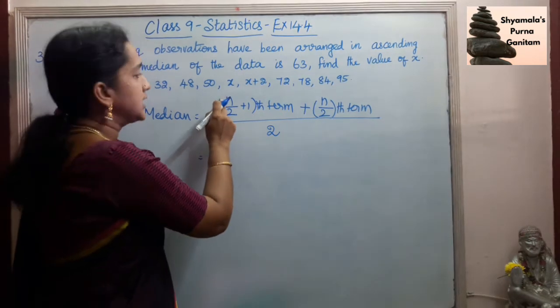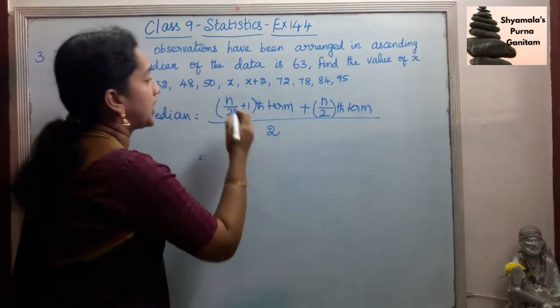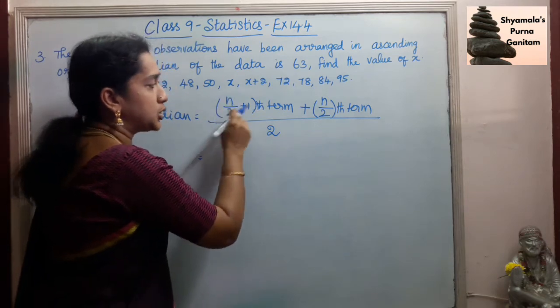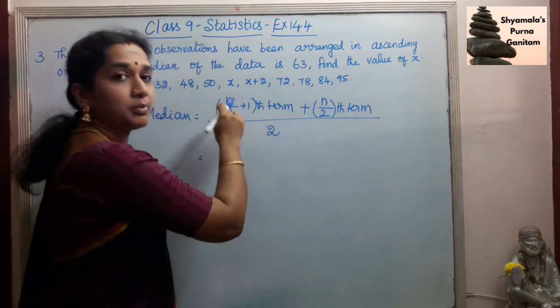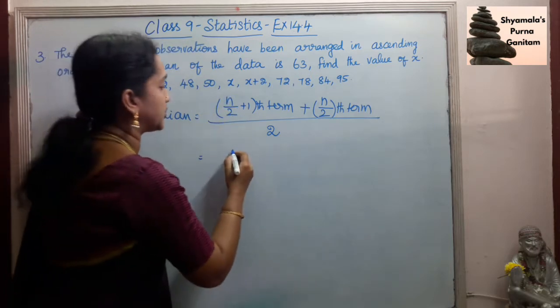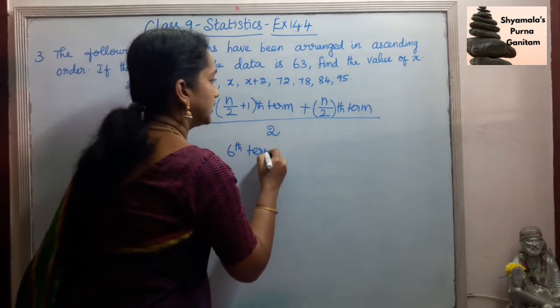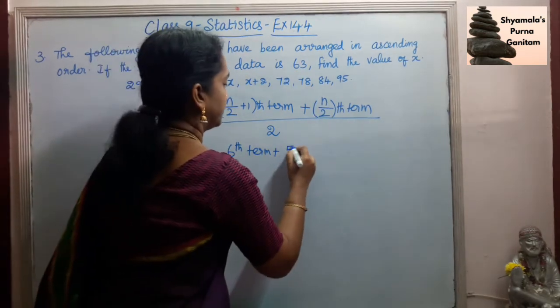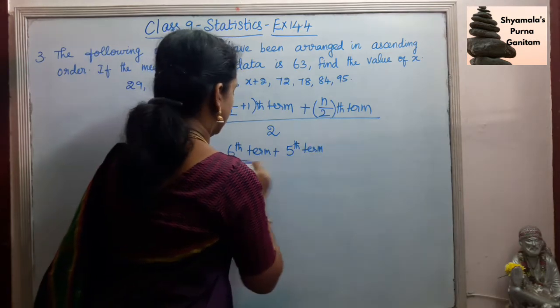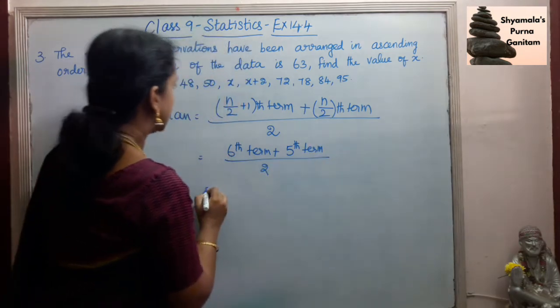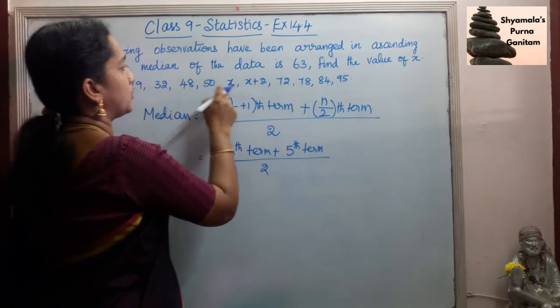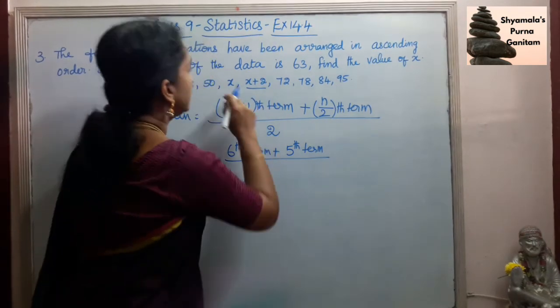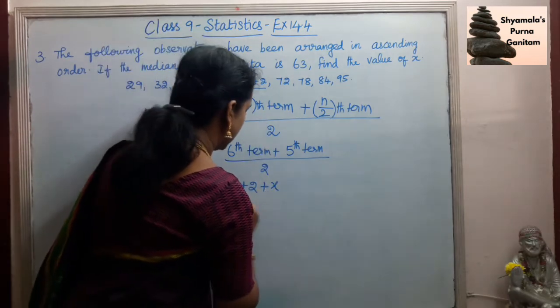So n is 10 here. So 10 by 2 is 5, 5 plus 1 is 6th. So 6th term plus 10 by 2, 5th term, divided by 2. So here in this, 1, 2, 3, 4, 5, 6. So 6th term is x plus 2 plus 5th term is x divided by 2.